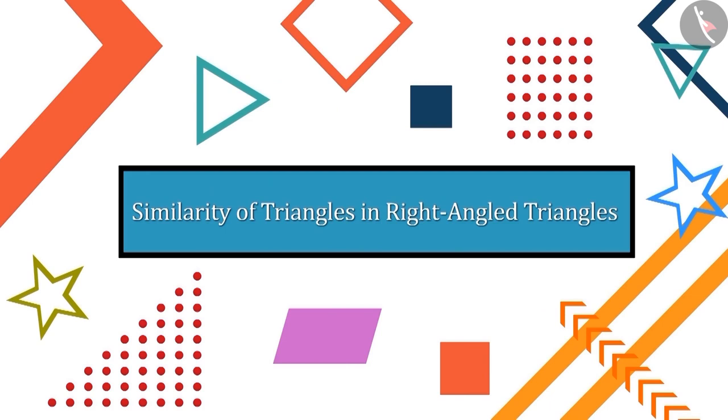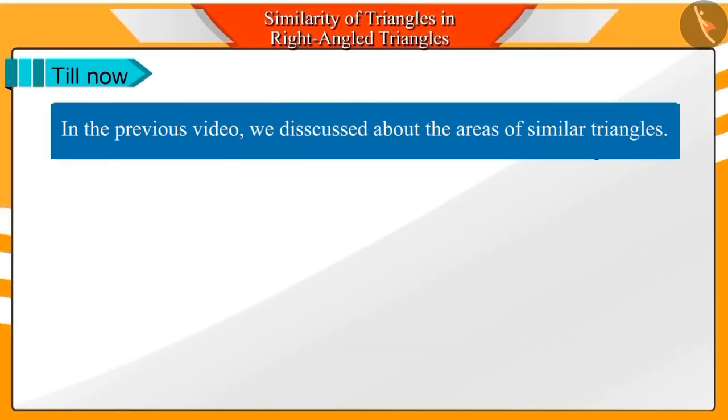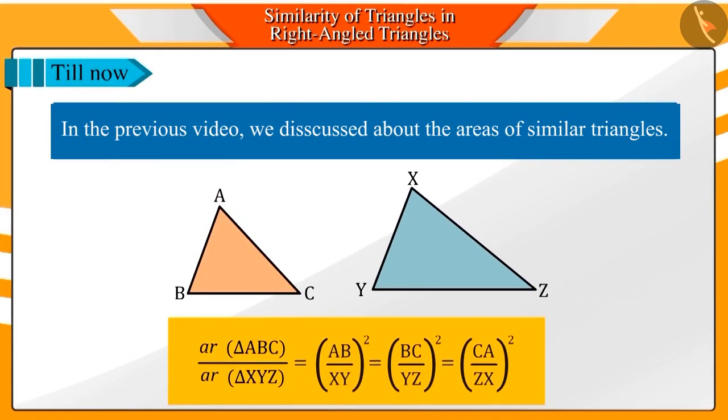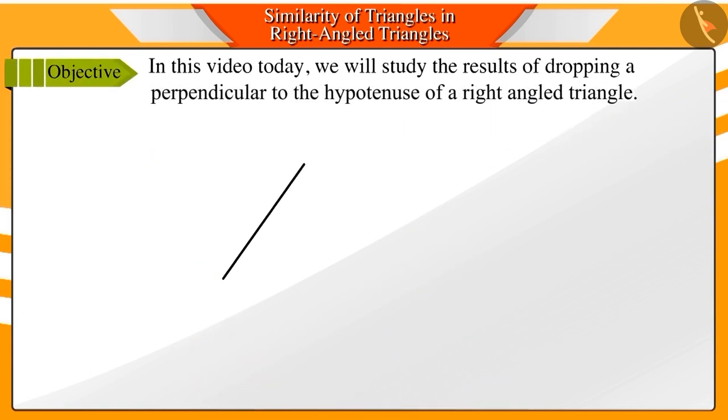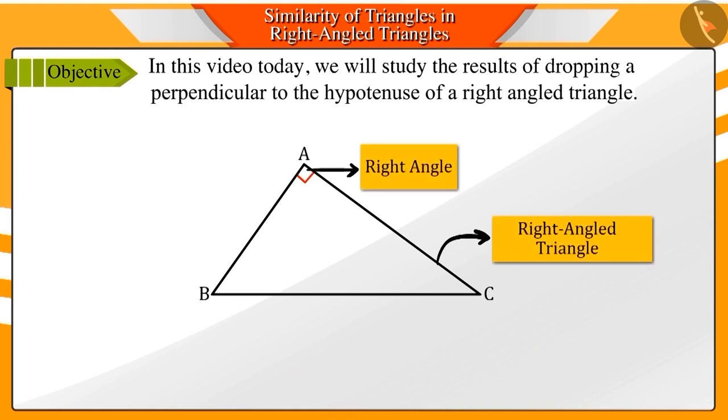Welcome to this video. In the previous video, we learned about the area of an equilateral triangle. In this video, we will study the outcome of dropping a perpendicular to the hypotenuse of a right-angled triangle.